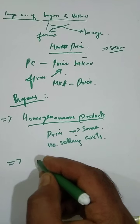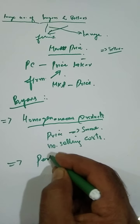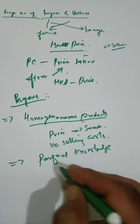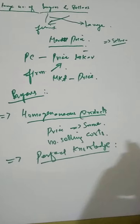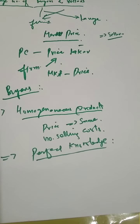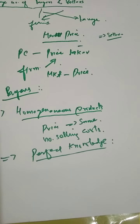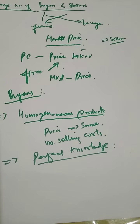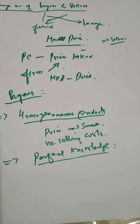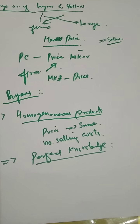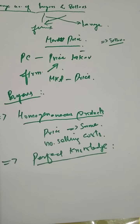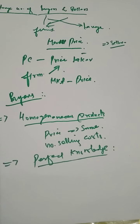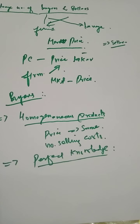The third important feature of perfect competition is perfect knowledge. Buyers and sellers in a perfectly competitive market are fully aware of the price prevailing in the market. They possess perfect knowledge — buyers know fully well at what price sellers are selling a given product. As a consequence, only one price prevails in the market.